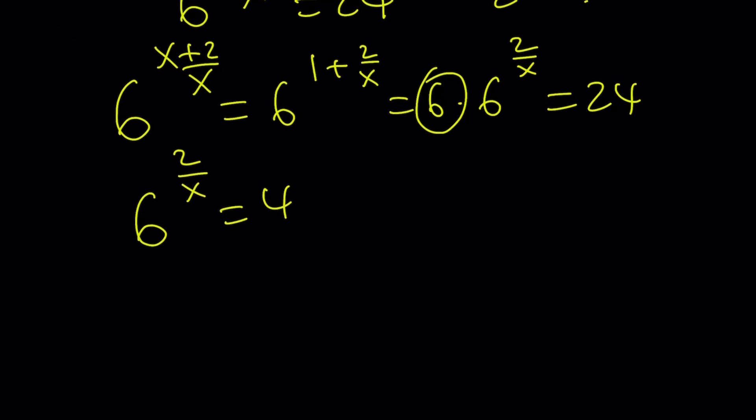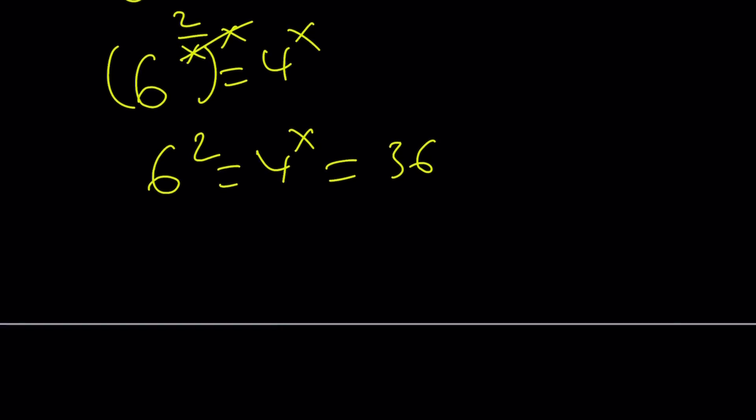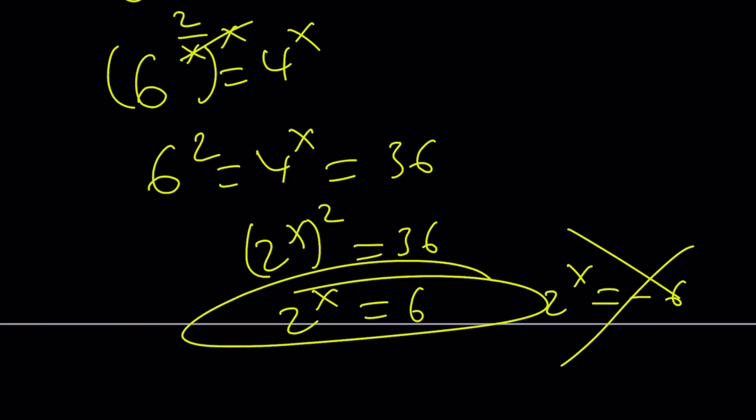Raise both sides to the power x. You get 6 to the power 2 equals 4 to the power x, which is 36. Now, 4 to the power x is 2 to the power x squared. And from here, you get 2 to the power x equals 6 plus minus. But negative 6 is not acceptable if x is real. So, we have to go with 6.